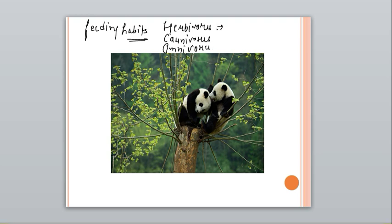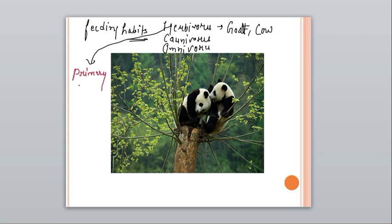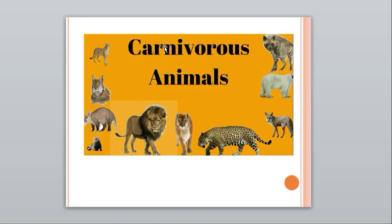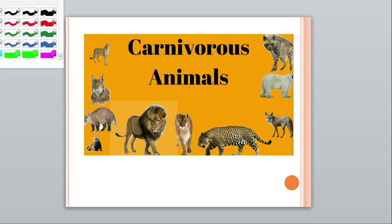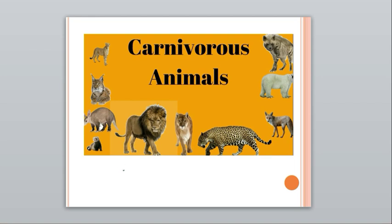Herbivores are those which only feed on plants — for example, goat and cow. Herbivores are the primary consumers, directly dependent on plants. Carnivores are those who eat herbivores or lower carnivores — they are meat-eating or flesh-eating animals.